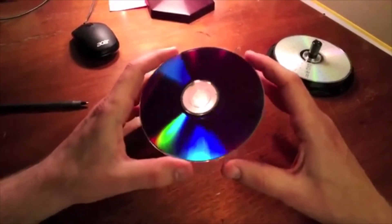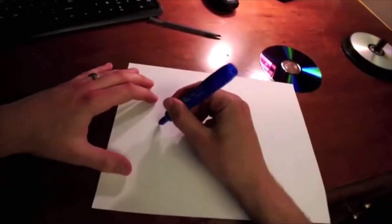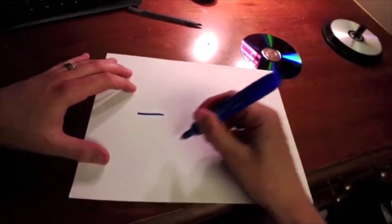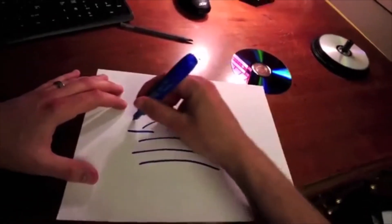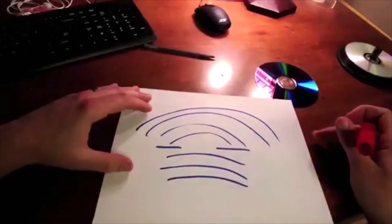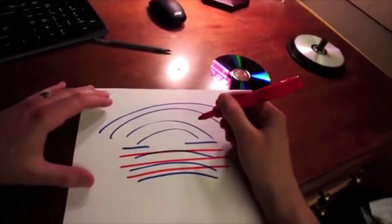This rainbow of colors arises through a process called diffraction. Diffraction happens any time you have a wave passing through a narrow opening. What happens is the wave starts to spread out more than it was before. The trick is that the way it spreads out depends on the wavelength of the wave.